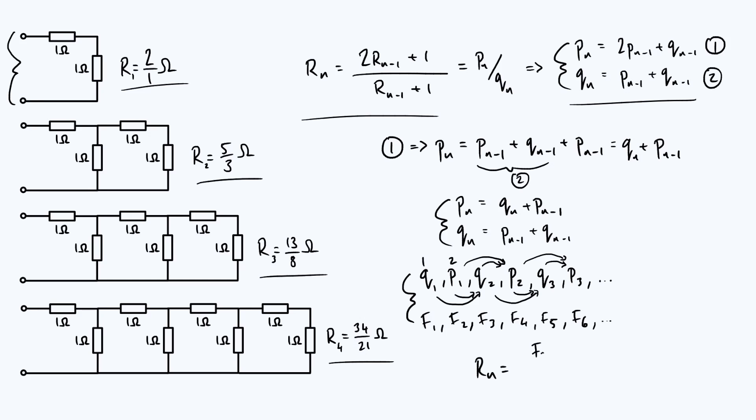because the Qs are just always one position earlier than the Ps, the denominator has to just be F subscript 2N minus 1. And so we've proved that this relationship with the fractions and Fibonacci numbers is going to be true forever, however many repeating units you have.